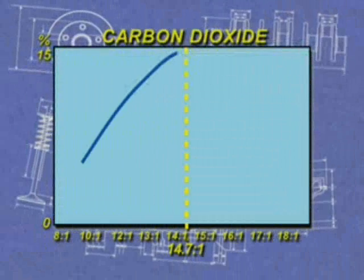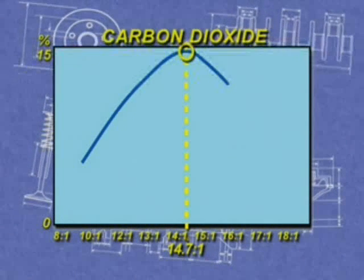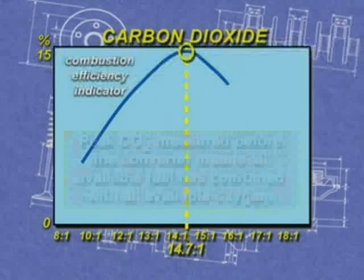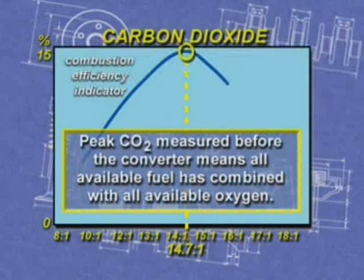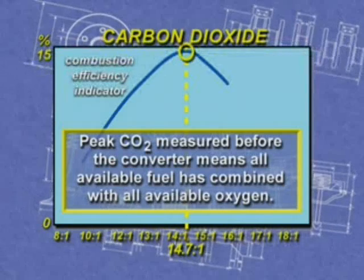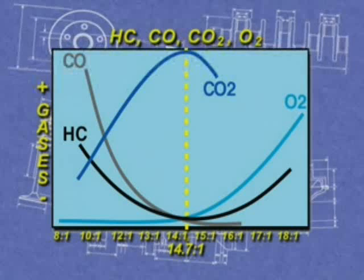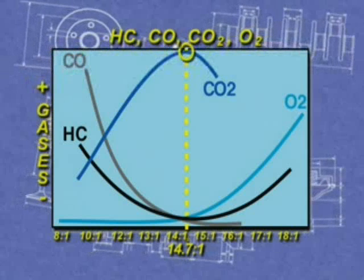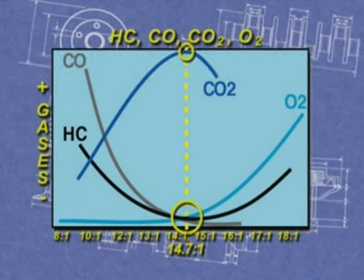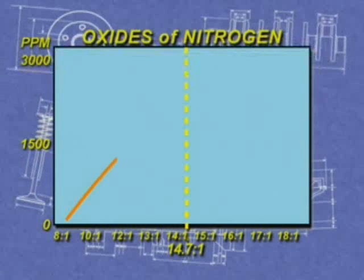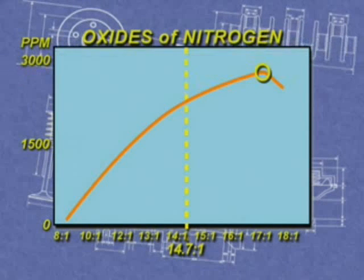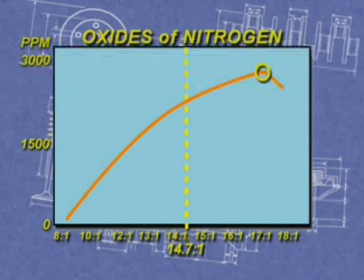Carbon dioxide reaches its highest level at the stoichiometric point, which is why CO2 is used as an indicator of combustion efficiency. The peak CO2 measured before the converter means that all of the available fuel has combined with all of the available oxygen. Notice that the production of CO2 is inversely proportional to the production of the other gases. Finally, NOx production increases as the mixture becomes leaner, with the highest levels of NOx generated at approximately 17 to 1, which is just short of the lean misfire point.